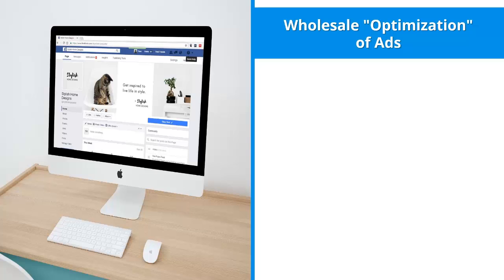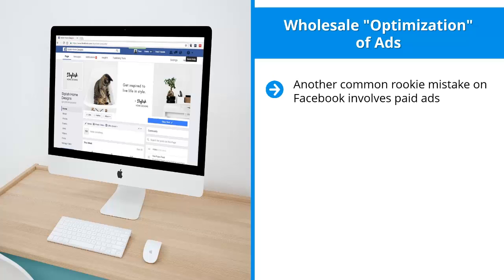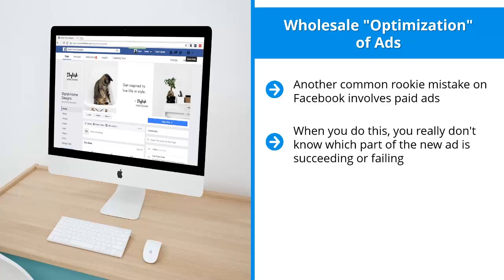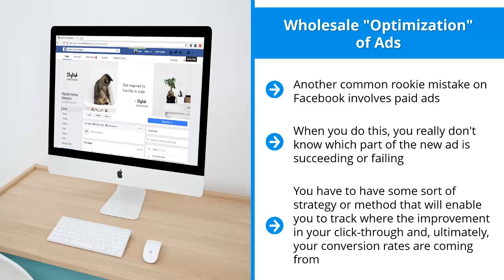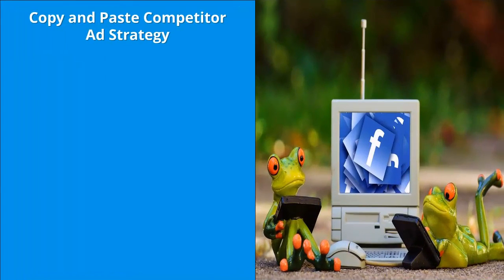Mistake seven: wholesale optimization of ads. If you notice that one of your ads is simply not performing, it's very tempting to just come up with a brand new ad by completely replacing it with something totally different. When you do this, you really don't know which part of the new ad is succeeding or failing — you're taking shots in the dark. You have to have a strategy that enables you to track where improvements in your click-through and conversion rates are coming from. Simply swapping out ads in total doesn't give you the data you need to make effective decisions.